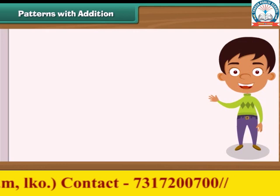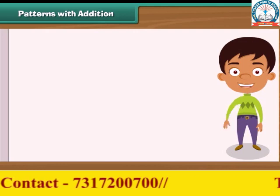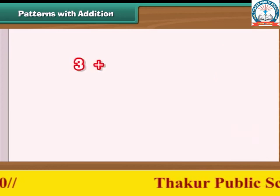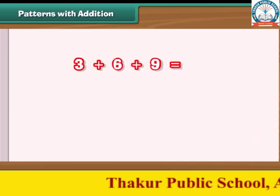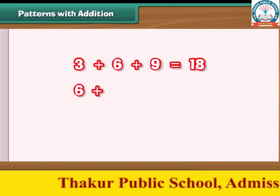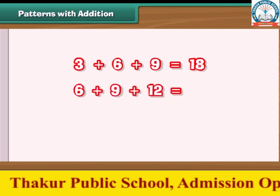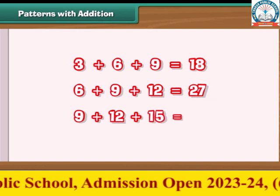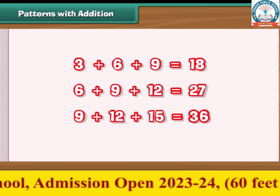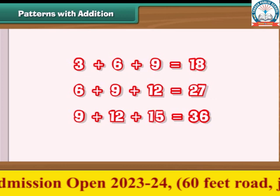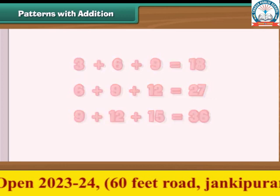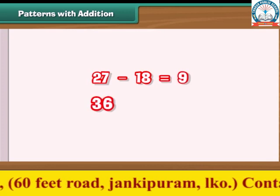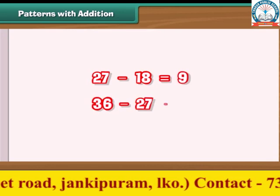Patterns with addition. Look at these sums — there is a pattern in them. 3 plus 6 plus 9 equals 18; 6 plus 9 plus 12 equals 27; 9 plus 12 plus 15 equals 36. We observe that the difference between two adjacent sums is 9: 27 minus 18 equals 9, and 36 minus 27 also equals 9.